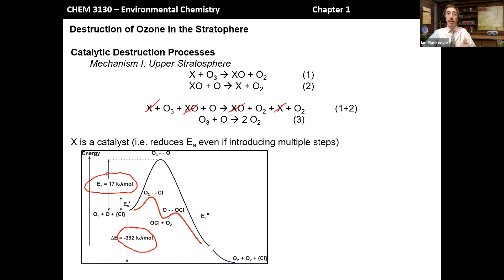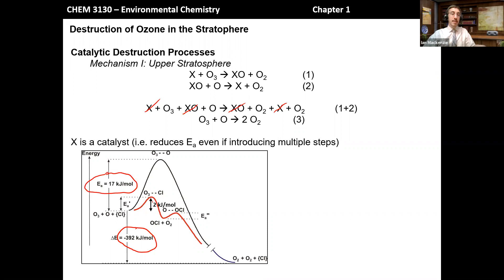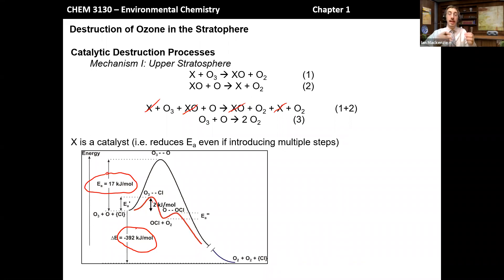When we introduce an X group such as chlorine — a single chlorine atom — this introduces a new step into the reaction but reduces the barrier dramatically. The activation energy drops from 17 kilojoules per mole down to only 2 kilojoules per mole, so the diagram is not drawn to scale. That barrier is easily overcome, and although we have an additional step, the kinetic barrier is reduced so dramatically that the overall process is much, much faster.